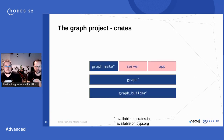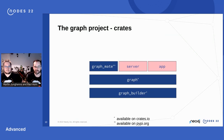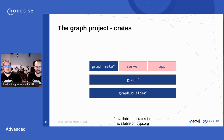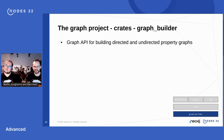Let's look at the overall architecture. The smallest compiled unit is a crate, and we have five crates in our project, which is called the workspace. The two crates at the bottom — graph-builder and graph — contain the graph implementation and the algorithms. Both are published on crates.io, similar to Maven Central. GraphMate provides our Python bindings on top of the graph crate, and server and app are both binary applications.